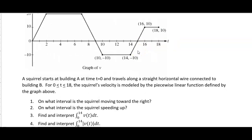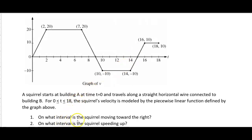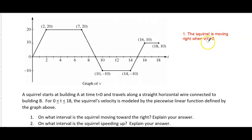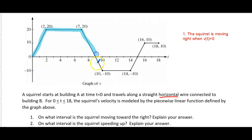Number one: on what interval is the squirrel moving toward the right? The squirrel is moving to the right when velocity is greater than zero. A positive velocity means you're moving to the right on a horizontal axis. Anytime the graph is above the x-axis, velocity is positive. There are two intervals where velocity is greater than zero: zero to nine and fifteen to eighteen.